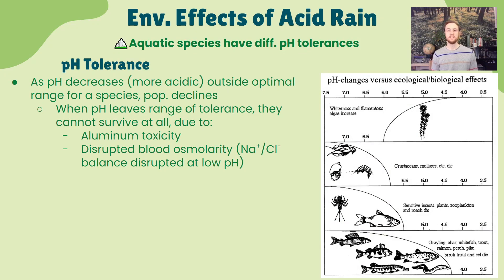Why do members of species die when pH decreases? One reason is aluminum toxicity — aluminum becomes more soluble at low pH and is toxic to many organisms, damaging their nervous systems and causing death. Another reason is disrupted blood regulation: H+ ions in acidic conditions can disrupt the balance of sodium and chloride in blood, resulting in death. These are two physiological reasons an organism might die in acidic conditions.